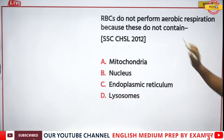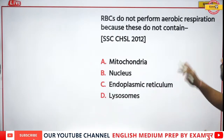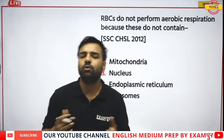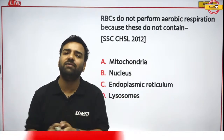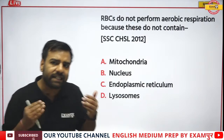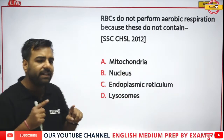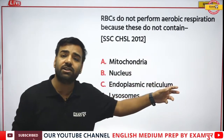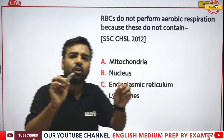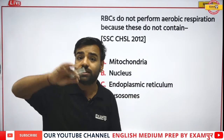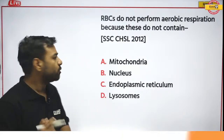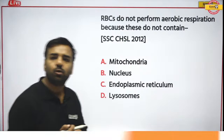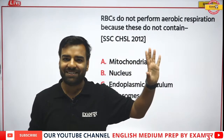The next question: RBCs do not perform aerobic respiration because they do not contain what? Respiration involves breathing in air containing oxygen and carbon dioxide. Aerobic respiration involves ATP — adenosine triphosphate. Most answered A, mitochondria.